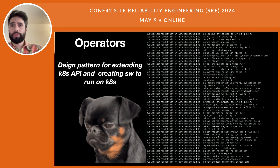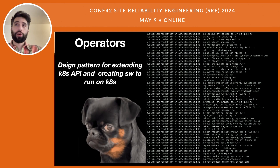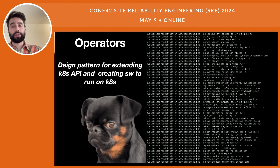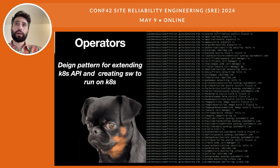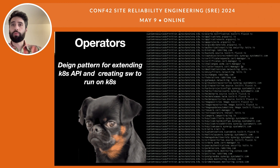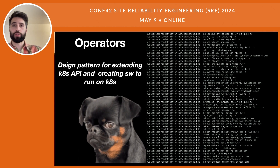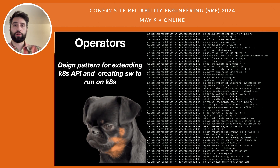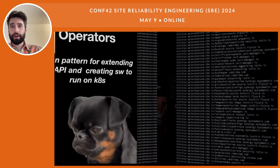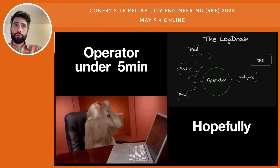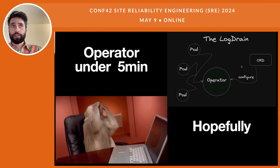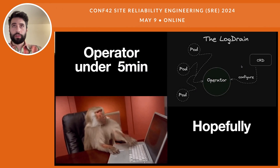If you do `kubectl get crds`, you'll see custom resources you have in your cluster — things like Harbor, Jaeger, or Keycloak configure custom resources. Now we're going to have a demo concerning operators.